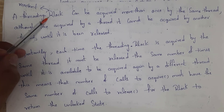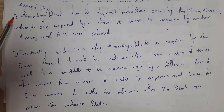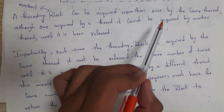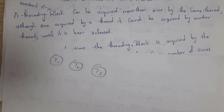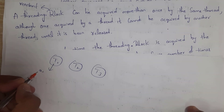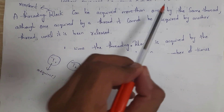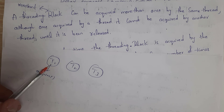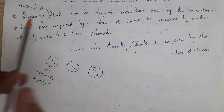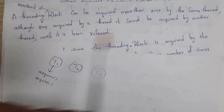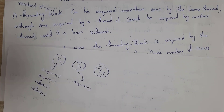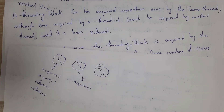I will now explain what is RLock, where R stands for reentrant. A threading RLock can be acquired more than once by the same thread. Although once acquired by a thread, it cannot be acquired by another thread until it has been released. For example, with threads T1, T2, and T3 — T1 can acquire the RLock more than once. For instance, thread T1 acquired the lock twice. However, once acquired by T1, it cannot be acquired by T2 or T3 until it has been released.